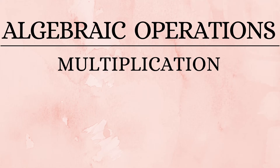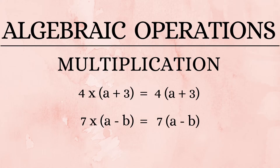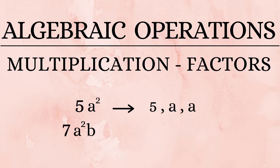Next, let's see what happens when we combine multiplication with addition or subtraction. '4a into (a plus 3)' and '7 into (a minus b)' are written in the expanded multiplication form. Before closing on multiplication, let's learn how to find factors. '5a squared' has factors of 5a and a. '7a squared b' has factors of 7a, a, and b.